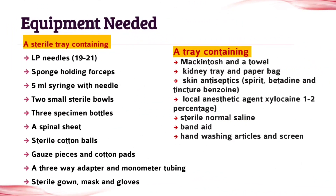Next topic is Equipment Needed — write all the points carefully. There are two types of equipment needed: firstly, the sterile tray containing items, and secondly, the air tray containing items. Write all the points for both.